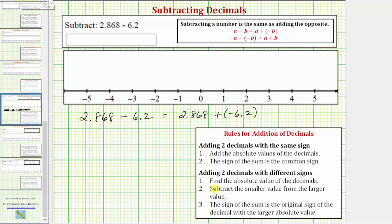So step one is to determine the absolute value of both decimals. So we need to find the absolute value of positive 2.868 and the absolute value of negative 6.2. The absolute value of a number is a number's distance from zero. And because distance is always positive, absolute value is always positive. So the absolute value of positive 2.868 is positive 2.868 and the absolute value of negative 6.2 is positive 6.2.